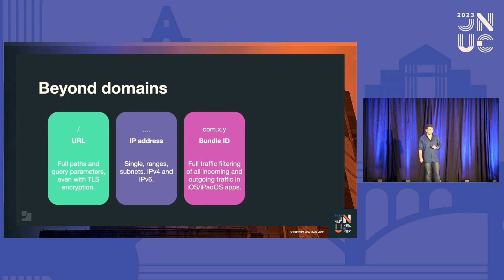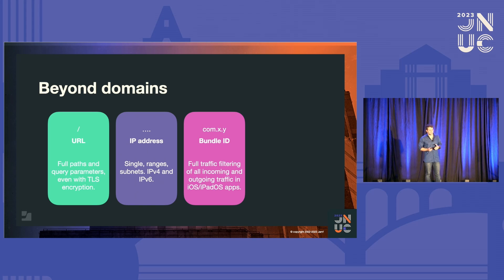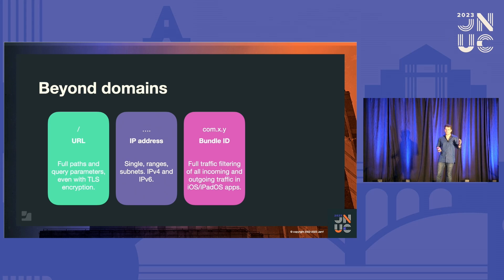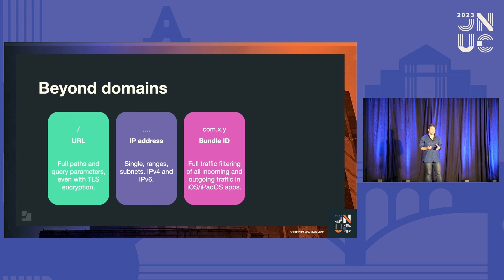Thirdly, we've got bundle IDs. Bundle IDs are basically like the domains for apps at Apple, and usually it's been very tough to block traffic around specific apps. Usually we would have used user agents or tried to triangulate all the traffic around a specific app — all the requests being made in incoming and outgoing traffic — and that's quite tough to do and not very airtight. But with the on-device content filter, we're able to block bundle IDs, and as a result, all incoming and outgoing traffic is blocked.